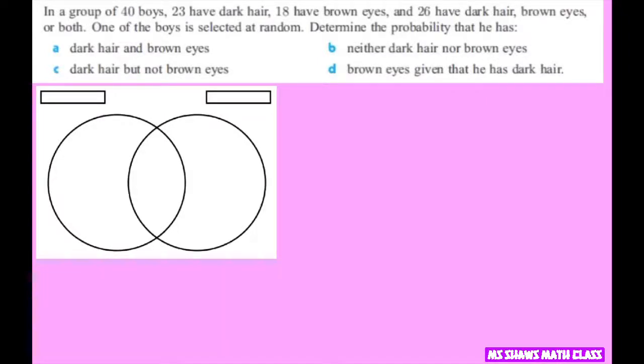Hi everyone! In a group of 40 boys, 23 have dark hair, 18 have brown eyes, and 26 have dark hair, brown eyes, or both. One of the boys is selected at random and we're going to determine probabilities.